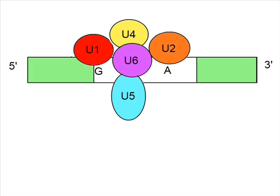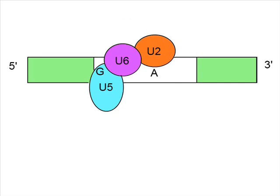U2 then recruits U4, U5, and U6 complexes, which also requires ATP hydrolysis. U4 serves as an inhibitor for U6. When U4 leaves, U6 base pairs with U2, and U5 displaces U1 at the 5' splice site.